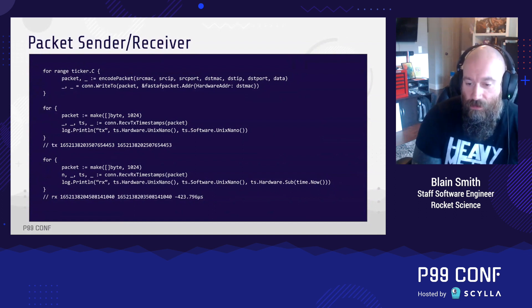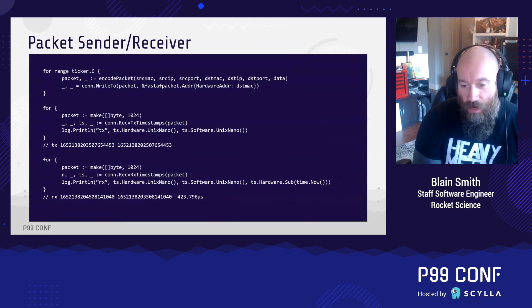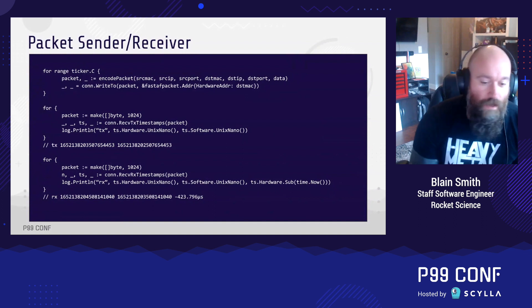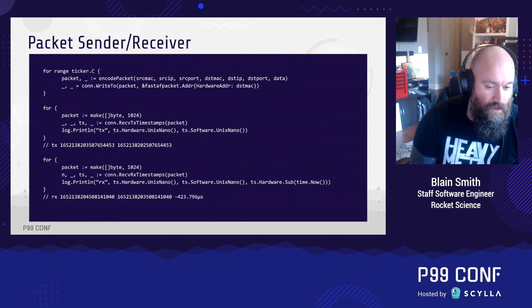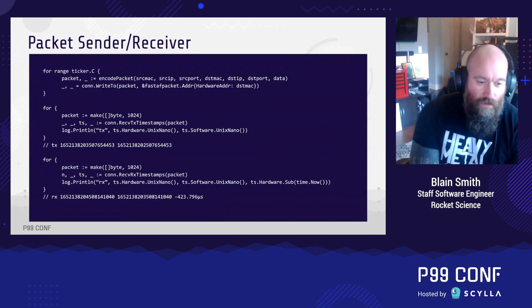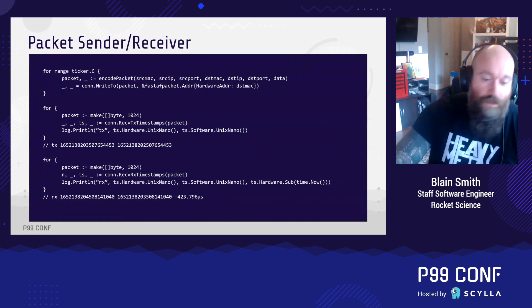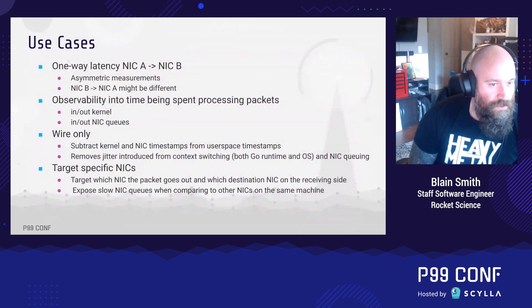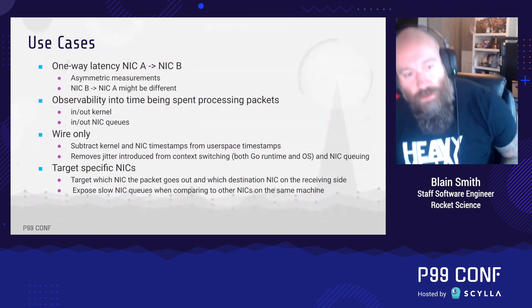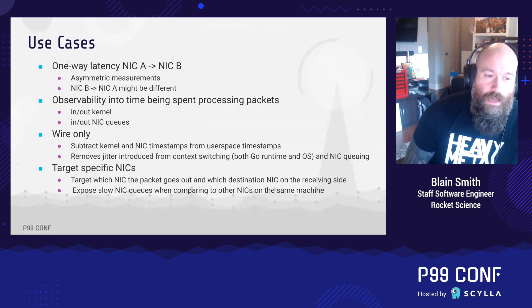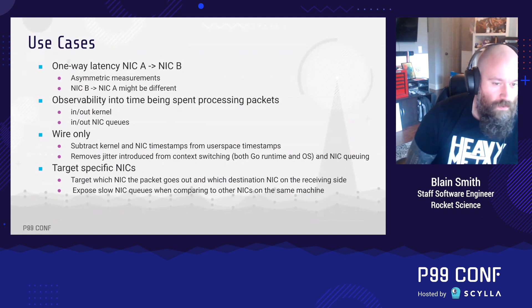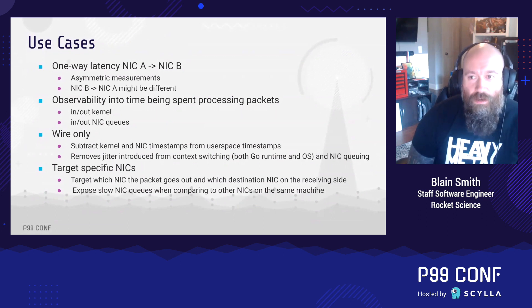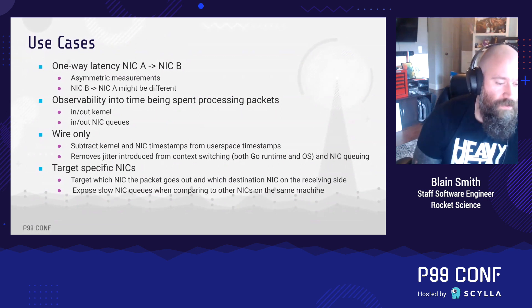This example shows that if we subtract the hardware timestamp from the current time at which we're executing that line, we see a difference of 423 microseconds — meaning the packet came into the network card 423 microseconds in the past, even though we only got the packet in our Go process in user space at that moment. With this information, we can measure one-way latency from one specific network card to another, and do asymmetric measurements, because the A-to-B measurement might be different from B-to-A depending on the paths packets take across a given network.